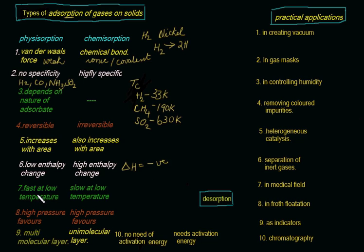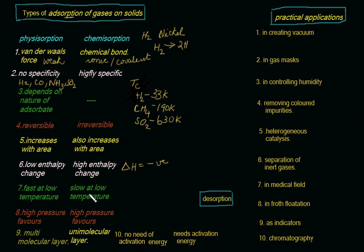The favorable temperature for physisorption is low temperature — physisorption takes place faster at lower temperature. But for chemisorption, high temperature is favorable, so the process is slow at low temperature. The reason is that chemical bonds have to be formed, which requires a lot of energy.